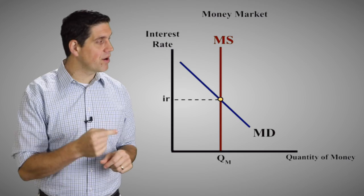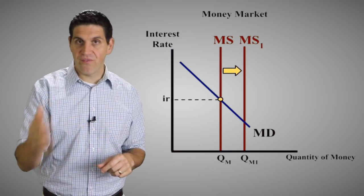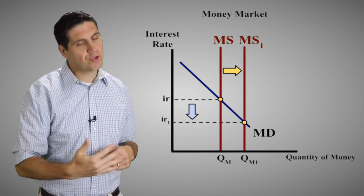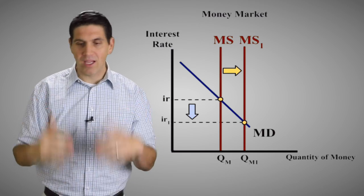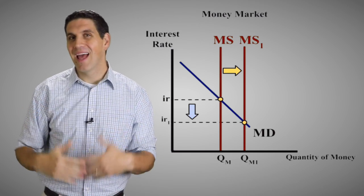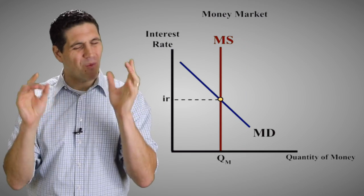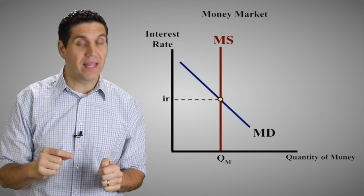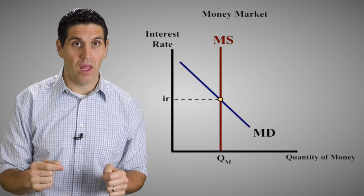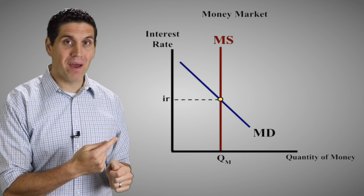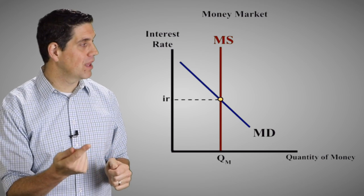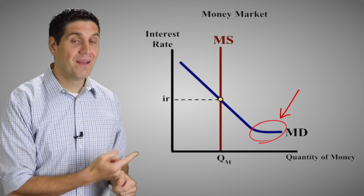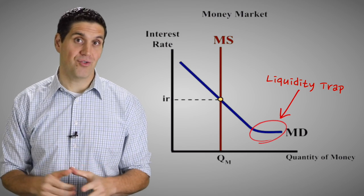You've learned the idea of monetary policy: when the Fed increases the money supply to decrease interest rates to expand the economy, increase investment and consumer spending. But what happens when the interest rate falls really, really low? The demand for money ends up looking like a flat line — and that's called a liquidity trap.